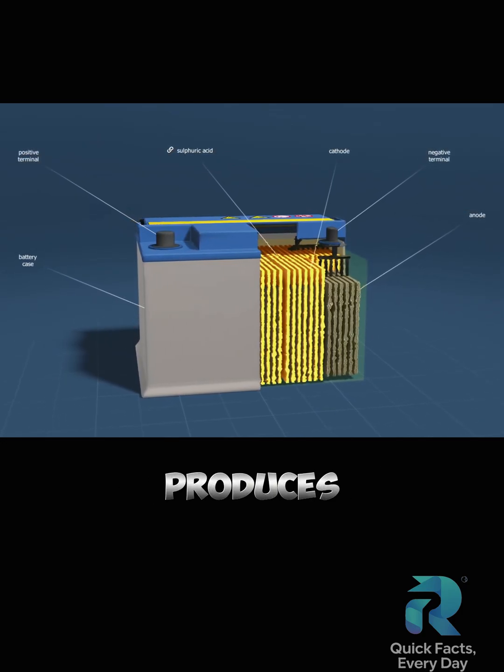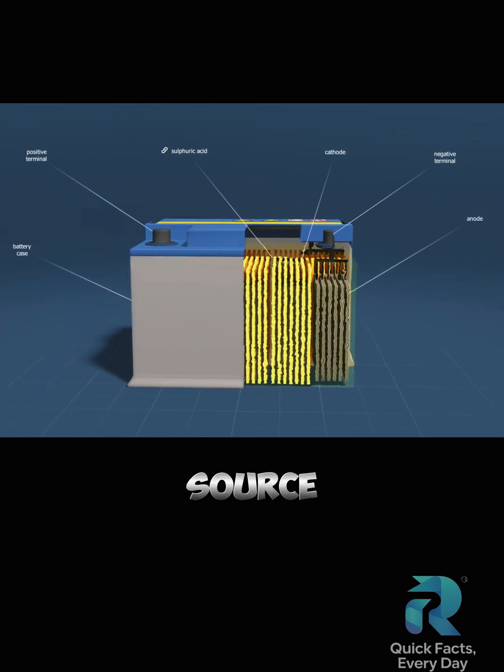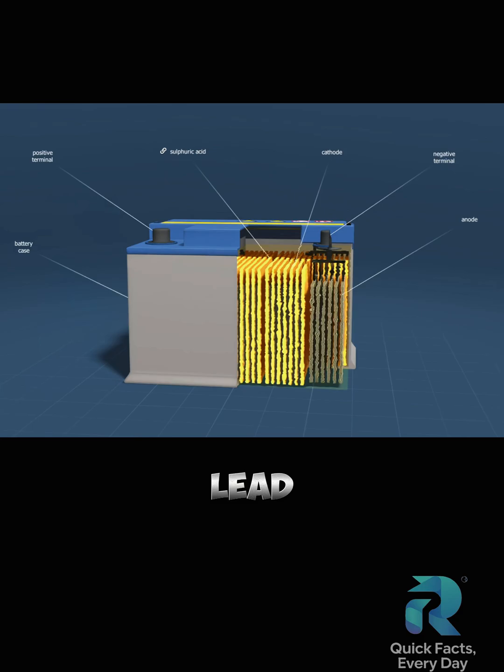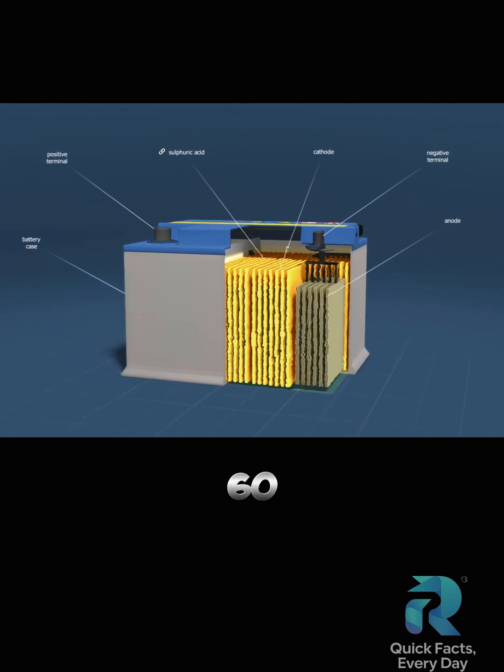Each cell produces 2V, but by connecting multiple cells in a series, a higher voltage power source can be created. A lead-acid battery has a charge-discharge efficiency of 60-70%.